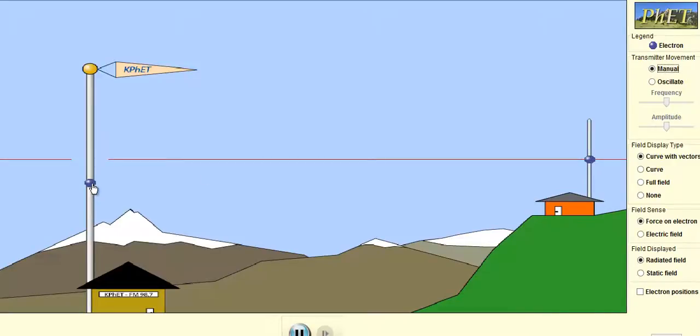So I'm going to take this electron and move it one time up. And you can see it created an electromagnetic wave, and this one should go one time up. And this is basically how radio signals get transmitted.